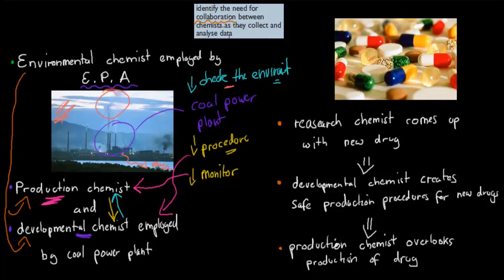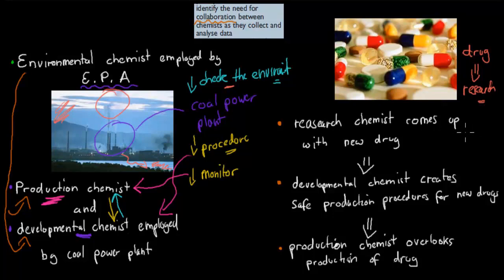Another example is the making of a new drug. First, you have to research the drug — figure out the chemistry behind how it can be produced. Once researched, you need to make a procedure so the drug can be produced on a larger scale. Once the procedure is in place, production happens, and the drug can be produced on a massive scale.